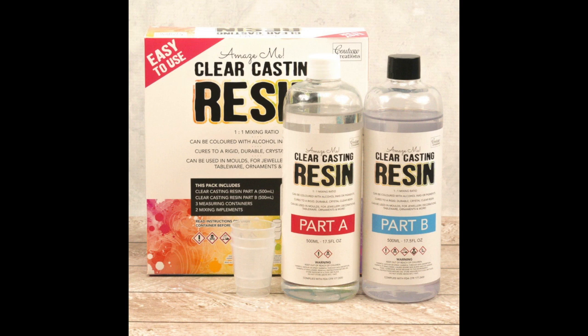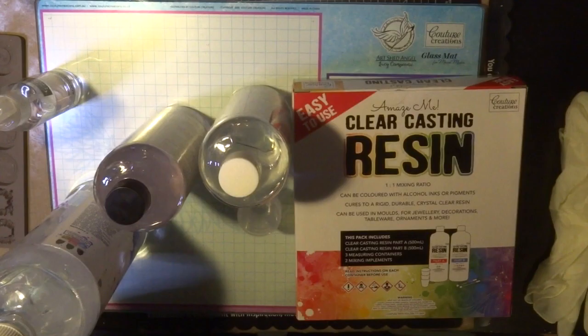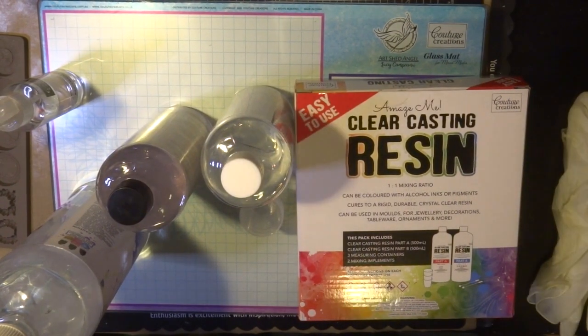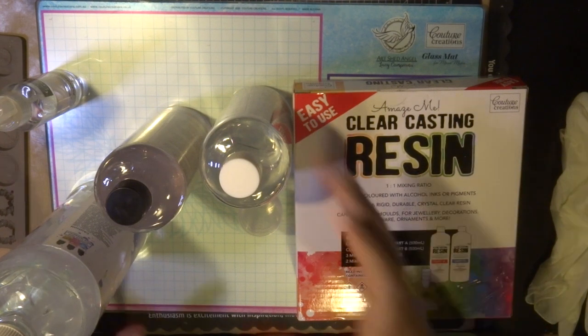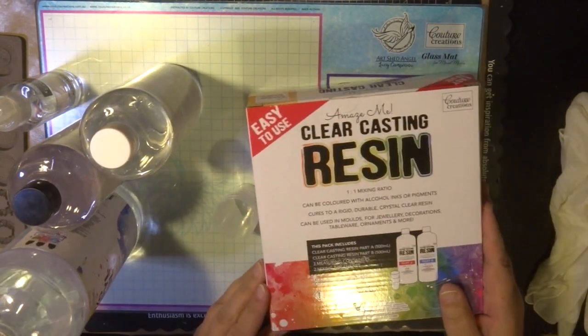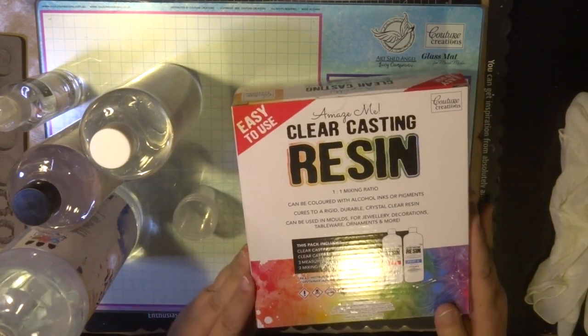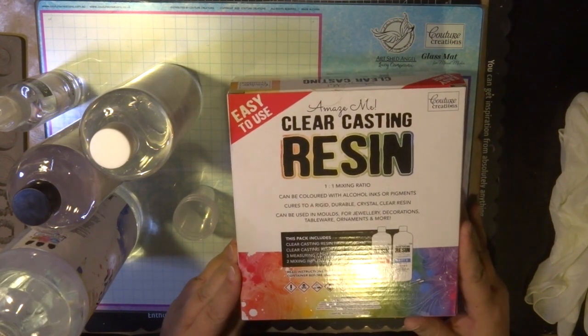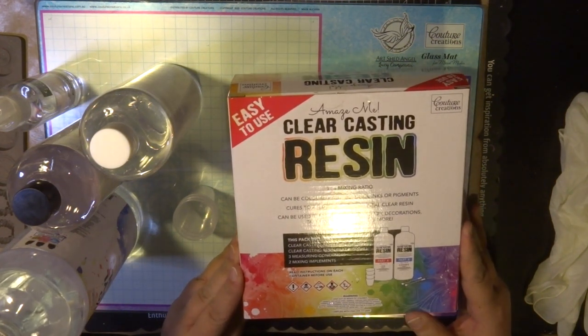The clear casting resin is easy to use with a ratio of one to one, so you need to use exact amounts of A and B to get the great resin finish. It solidifies in about 10 minutes but then needs to cure overnight for the best results.